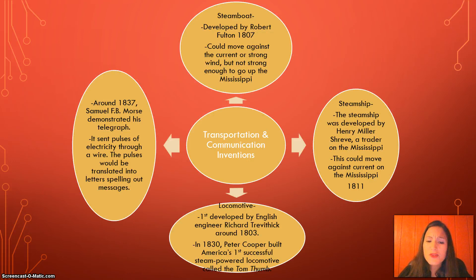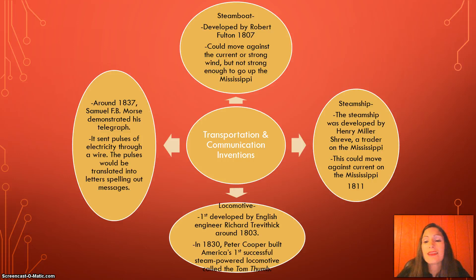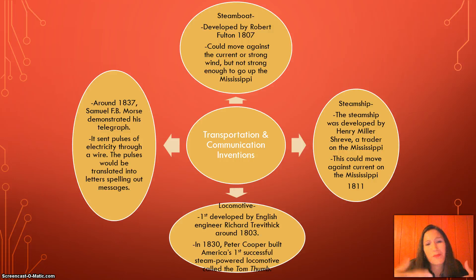Looking at transportation and communication inventions: the steamboat was developed by Robert Fulton in 1807 and could move against the current or strong wind, though it was not able to navigate against the Mississippi River. In 1811, the steam ship was developed by Henry Miller Shreve, a trader on the Mississippi, and it could move against the Mississippi current. You can see how people take an idea, perfect it, and make something new — starting with the steamboat, then the steam ship, which then gave the idea for the steam-powered locomotive.